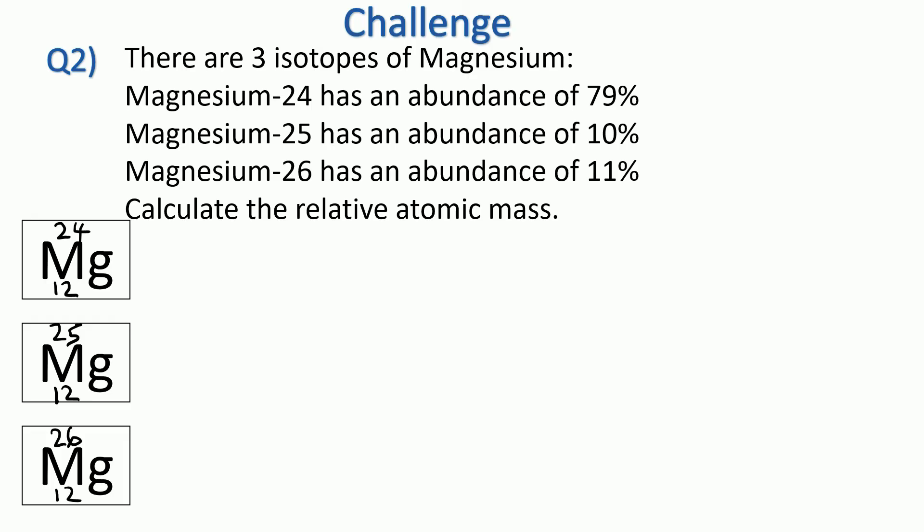So let's start working our way through. For magnesium-24, there's 79%; magnesium-25, there's 10%; and magnesium-26, there's 11%. So for magnesium-24, we do 79 divided by 100, that's the 79%, times by the mass number 24, and we get 18.96.